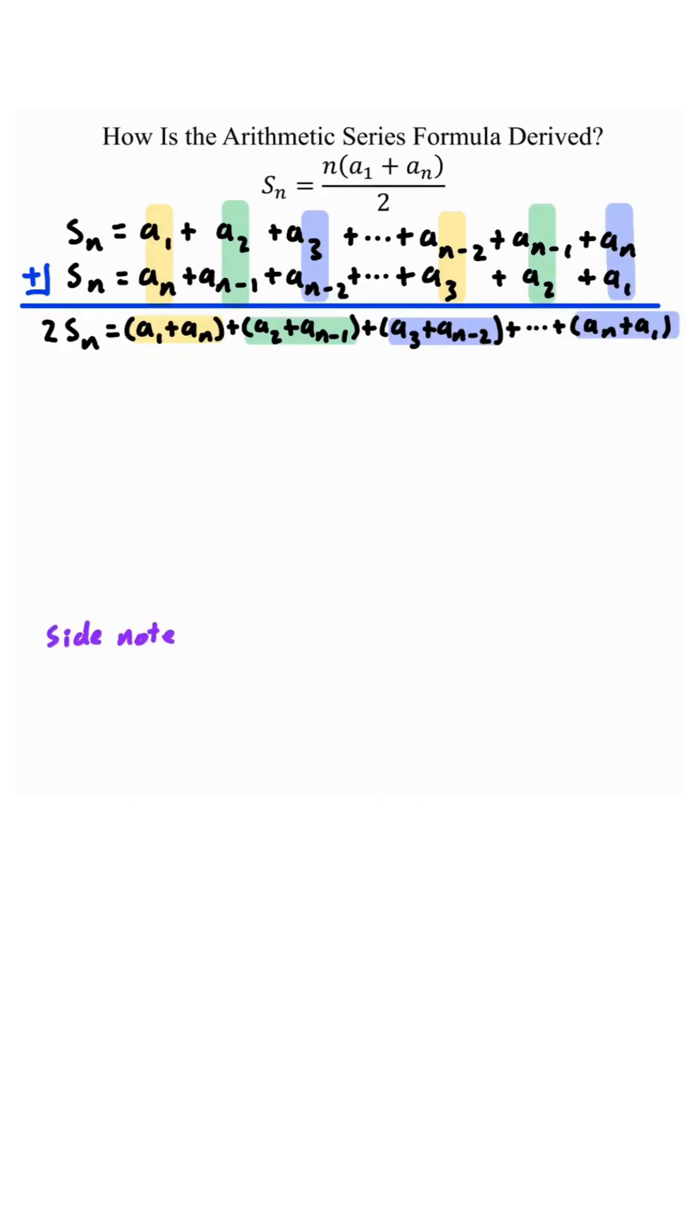Now let's take a little side note. What is a sub 2 plus a sub n minus 1? A sub 2 can be expressed as a sub 1 plus d, whereas a sub n minus 1 can be expressed as a sub n minus d. The d's will cancel, leaving a sub 1 plus a sub n.